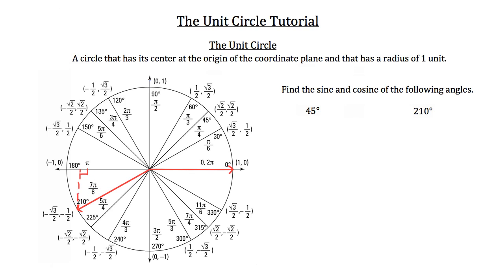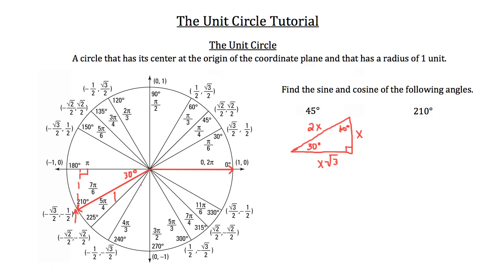Notice that 210 degrees is just 30 degrees past 180, so we're dealing with a 30-60-90 right triangle. In a standard 30-60-90 triangle, the value across from the 30-degree angle is x, the value across from the 60-degree angle is x root 3, and the value across from the 90-degree angle is 2x — the hypotenuse. For our unit circle triangle, the hypotenuse equals 1, because that's the radius of the unit circle.